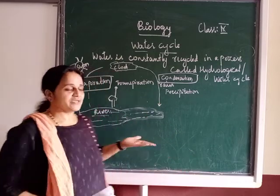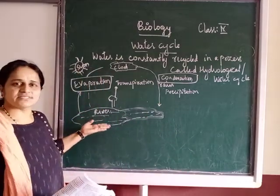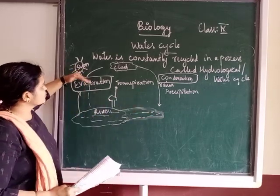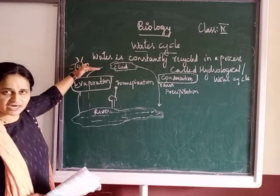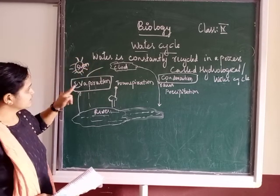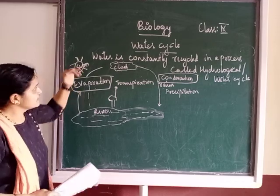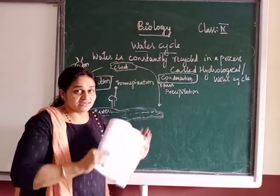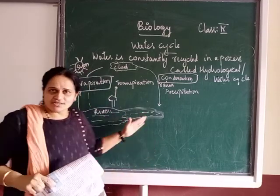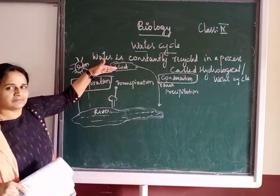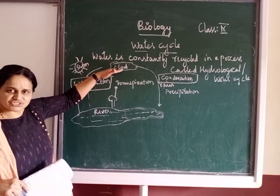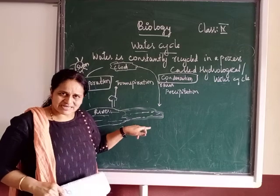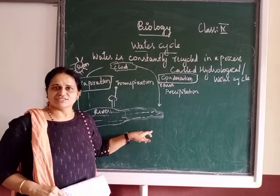From where does this water vapor come? It comes from water bodies like rivers, lakes, and oceans. From there, water moves up into the environment in the form of vapors by evaporation. Then it comes back down again in the form of rain. That is recycling — water going up into the atmosphere as vapors forming clouds, then coming back down to earth as rain.